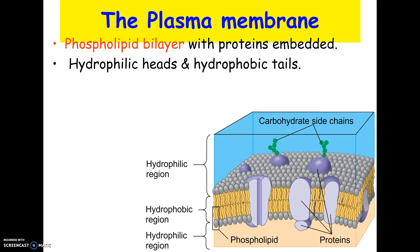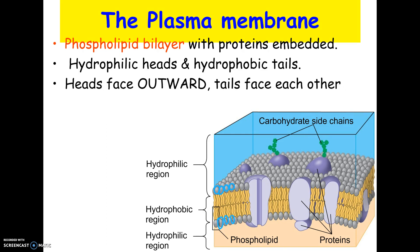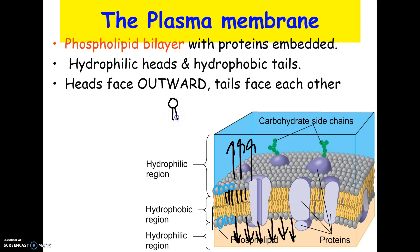The heads, which are the phosphates, are hydrophilic — they like water. The tails are the fatty acid chains and are hydrophobic, so they don't like water. The heads face outward and the tails face each other. The phosphates face outside the cell and face the watery environment inside the cell, while all the fatty acids face each other. If you put a bunch of phospholipids into water, they would actually align themselves into a cell membrane.